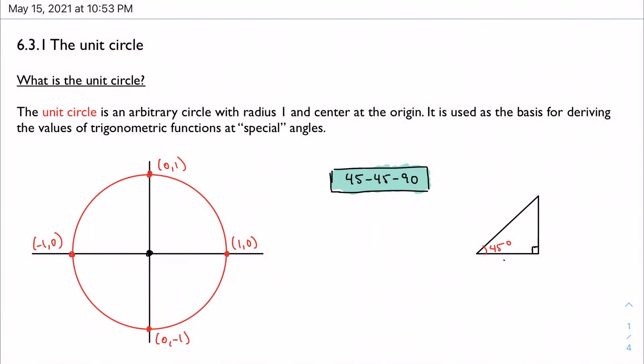6.3 we're talking about the unit circle, and this is a fundamental part of trigonometry. This is something that forms a lot of the basis for the way we think and understand trig, so it's not going away. It starts with this arbitrary circle that we draw called the unit circle, and it's got a radius of one, which is why it's called the unit circle, and its center is at the origin.